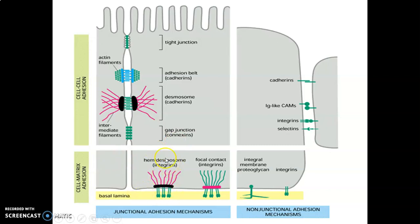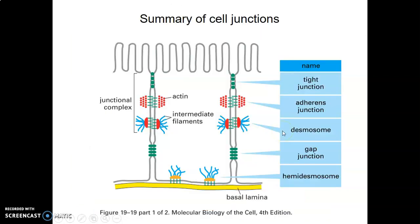To recap: desmosomes connect intermediate filaments of one cell to another. Adherens junctions connect actin of one cell to another. Tight junctions connect cell to cell to prevent leakage. GAP junctions allow molecules to pass through. Hemidesmosomes link intermediate filaments onto the basal lamina.